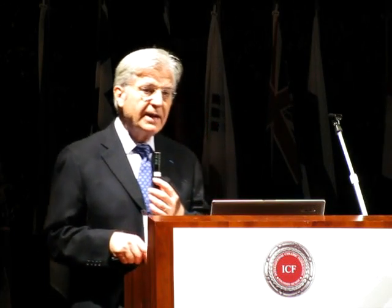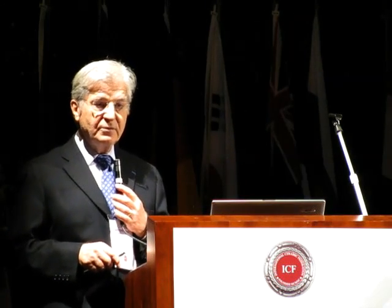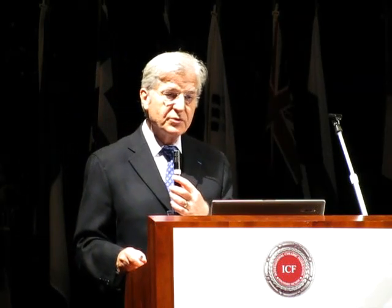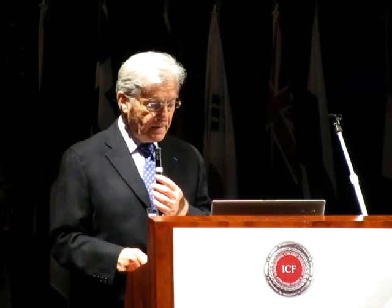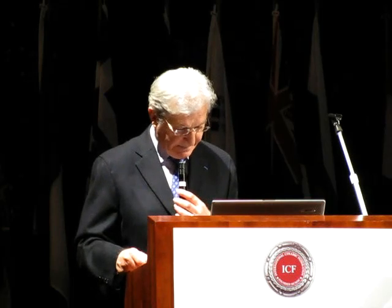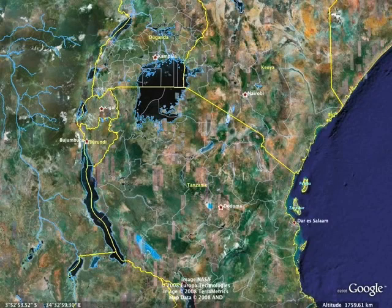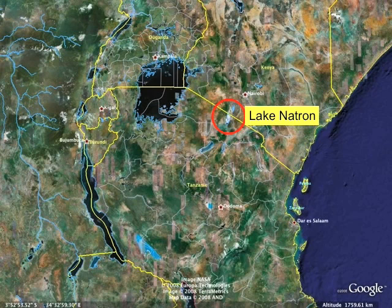We have these salts at our disposal in millions of tons. Here we see the country from the satellite, focusing on a place called Lake Natron. It is called Lake Natron because it is full of sodium carbonate.